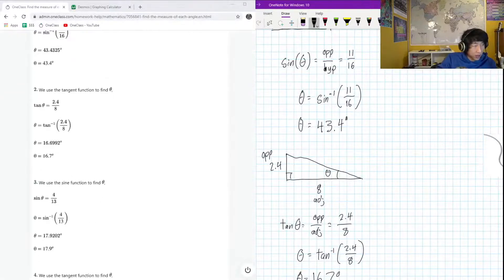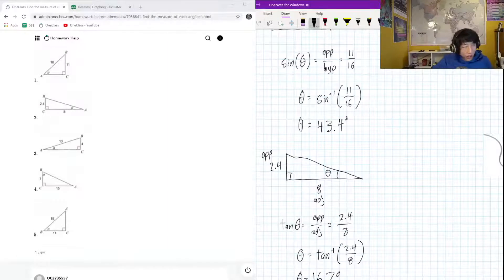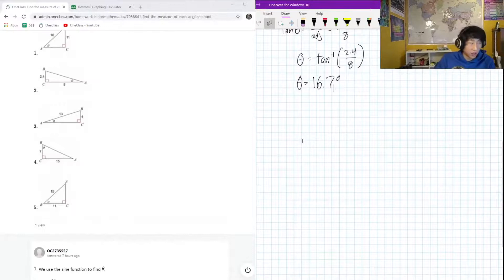Hopefully we got the same answer down here - 16.7, awesome. So we got two down, three left to go. Let's keep it moving. Here we got question 3 which has this triangle.